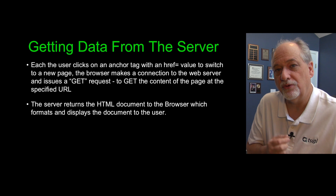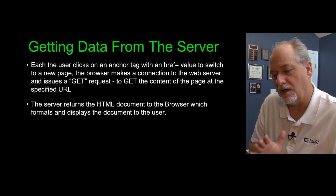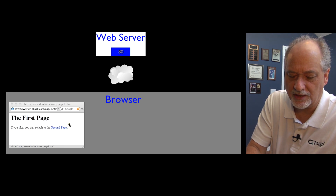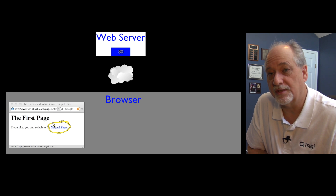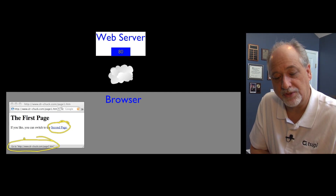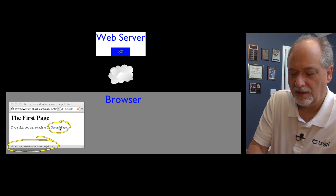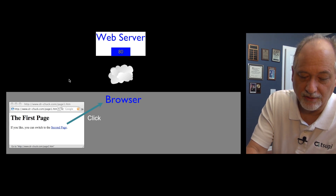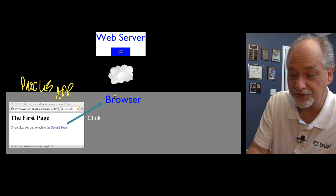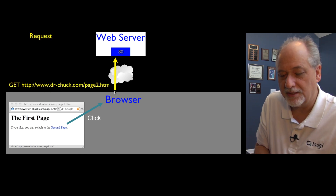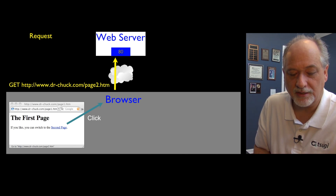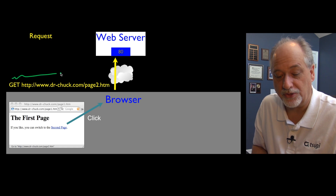Let's talk about what happens when you click on a link. Imagine you're looking at a web page — drchuck.com/page1 — and inside there is a hyperlink. When you click it, the browser, which is an application running on your computer, makes a connection to port 80 on the web server drchuck.com and sends a request. This request is precisely specified by a standard, which we'll see in a second.